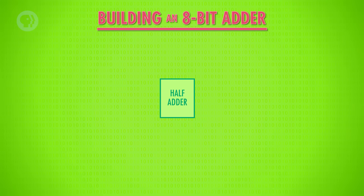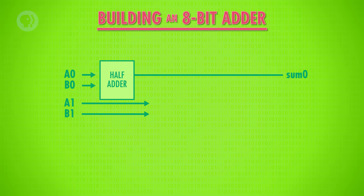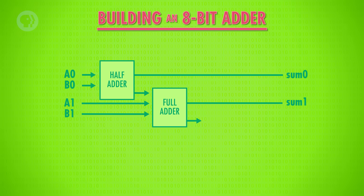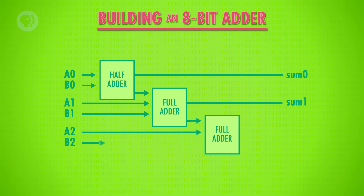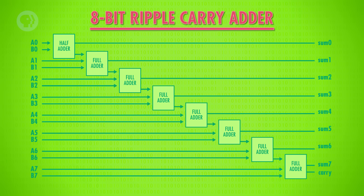Armed with our new components, we can now build a circuit that takes two 8-bit numbers, A and B, and adds them together. We start with the very first bits A0 and B0 — there's no carry bit yet, so we use a half adder. The output is sum 0. Then we add A1 and B1 using a full adder that also inputs any carry bit from the previous addition. We take any carry from that full adder and run it into the next full adder for A2 and B2, and keep doing this until all 8 bits have been added. Notice how the carry bits ripple forward to each subsequent adder — this is called an 8-bit ripple carry adder.